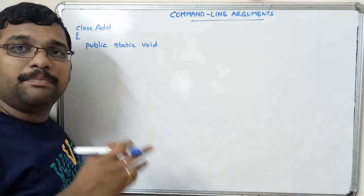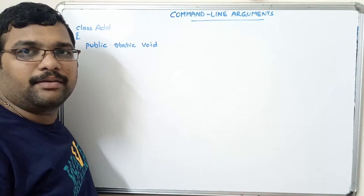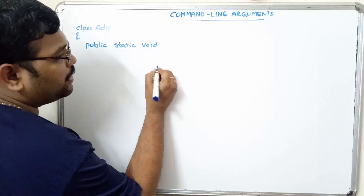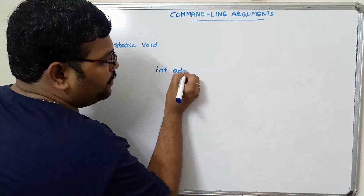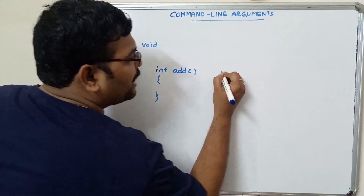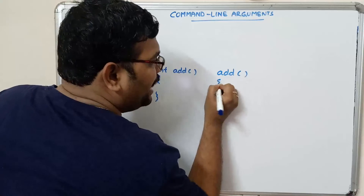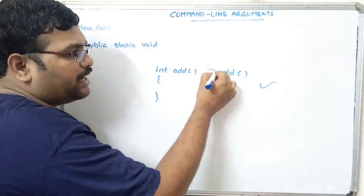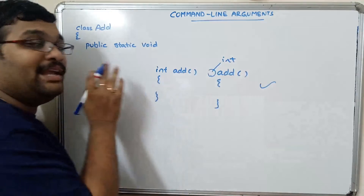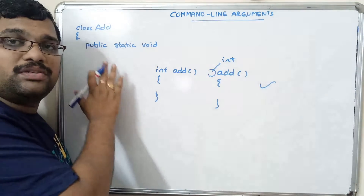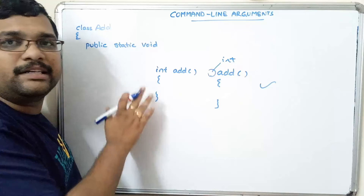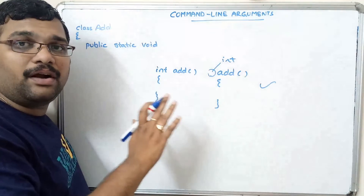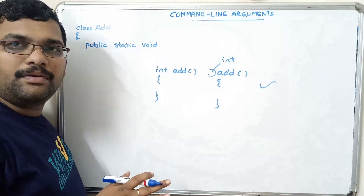Unlike in C where you could omit the return type and it would default to integer, in Java the user must explicitly specify the return type. There is no default return type in Java, so here we write void for the main function.